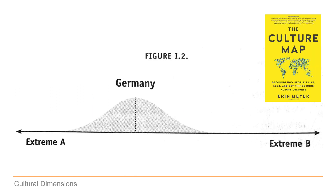How is this research done? Erin Meyer explains that in every society you will find the typical representative, but also people at extreme A or extreme B of a certain cultural dimension. So you will find members of the society that tend towards one or the other side, to the far end on both sides. What you get is a normal distribution, and that gives you the value we saw in the graph before.